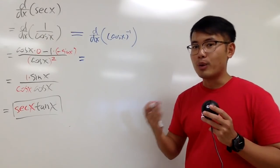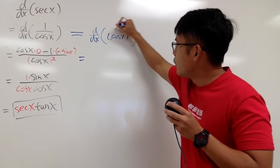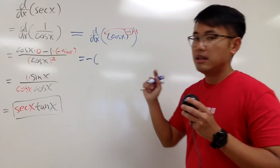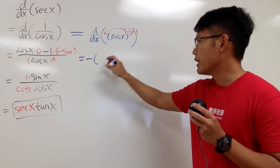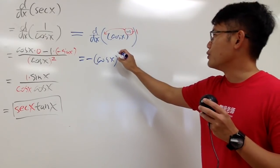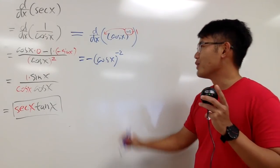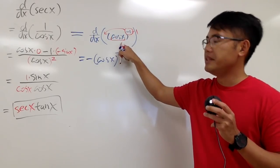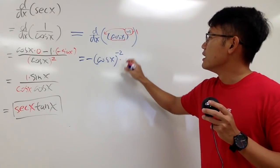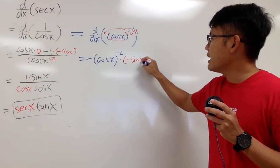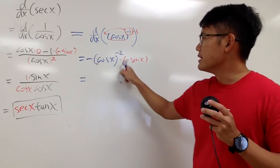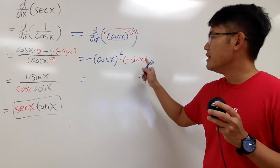When we look at this, we get to use the power rule. Bring the power to the front and then subtract 1. So we get negative 1 times cosine x raised to the power of negative 1 minus 1, which is minus 2. And don't forget, the chain rule says we have to multiply by the derivative of the inside. The derivative of cosine x is negative sine x. Negative times negative, we get positive.